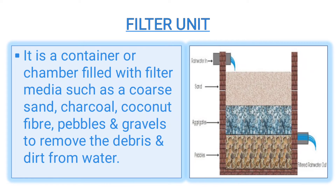Next, the filter unit: the filter unit is placed over the storage tank or separately. It is a container or chamber filled with filter media such as coarse sand, coconut fiber, pebbles, and gravels to remove debris and dirt from the water that enters the storage tank. In this picture we can see that at the topmost level coarse sand is placed, below this aggregate is placed, and below this pebbles are placed. When water flows from top to bottom, the debris and dirt particles are absorbed by these layers and fresh water comes out.